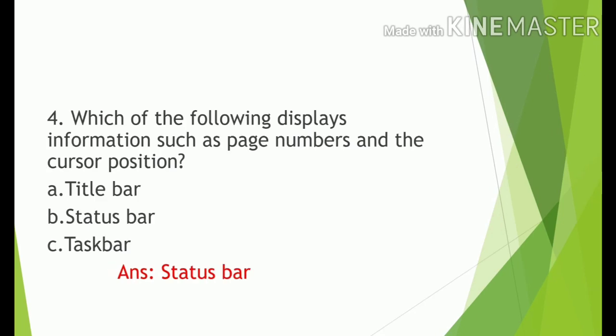Number 4. Which of the following displays information such as Page Numbers and the Cursor Position? A. Title Bar. B. Status Bar. C. Taskbar. Answer: Status Bar.